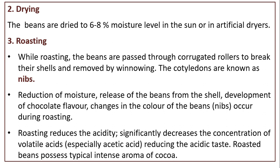Next is drying. The beans are dried to six to eight percent moisture level in the sun or in artificial dryers. Next is roasting. While roasting, the beans are passed through corrugated rollers to break their shells, and the shells are removed by winnowing. These cotyledons are known as nibs.